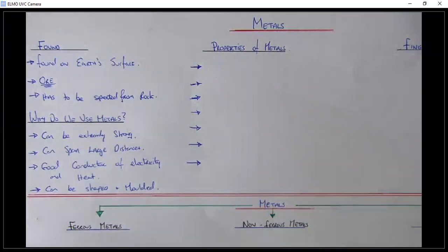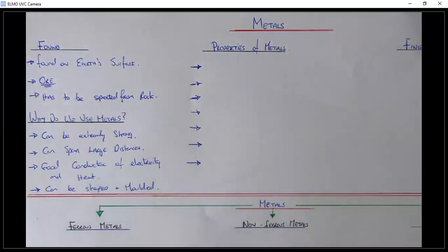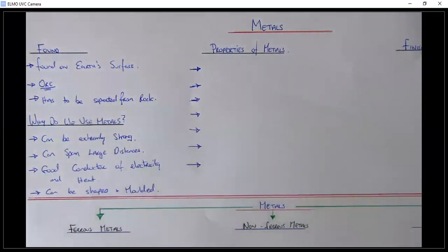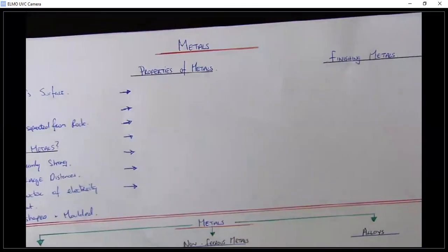Metals are a good conductor of electricity and heat, so you'll see them used in electrical cables and plumbing — the most common example being copper, which many of you will be familiar with. The last thing is that metal can be shaped and molded fairly easily. So those are a few reasons why we use metals.